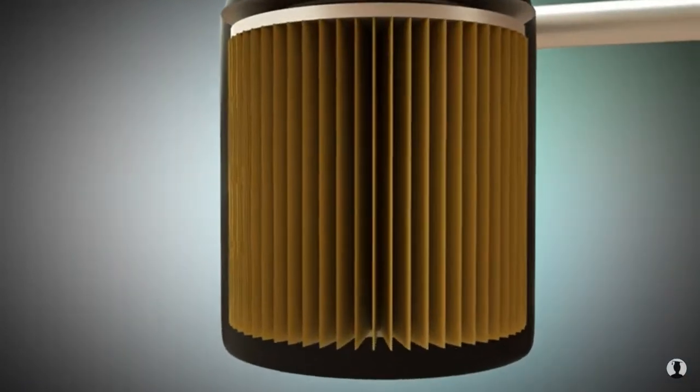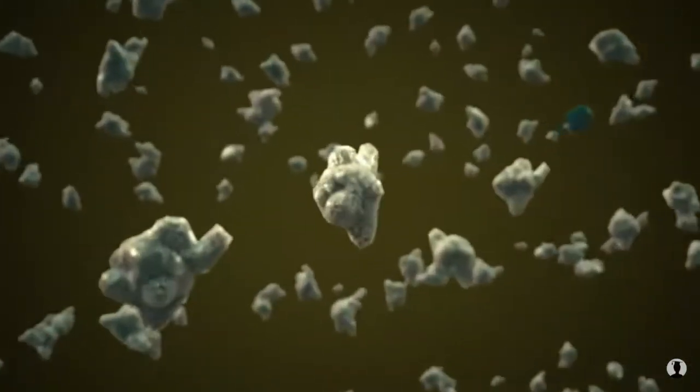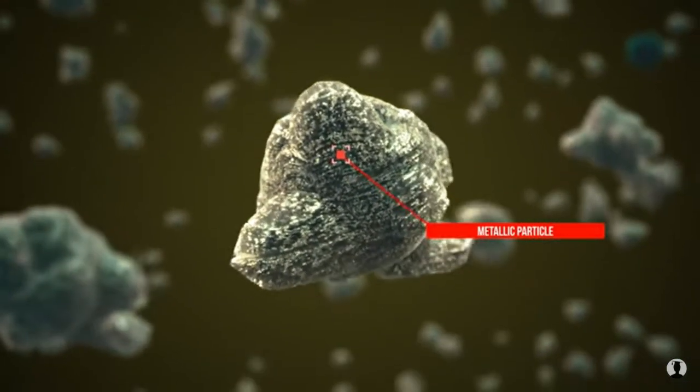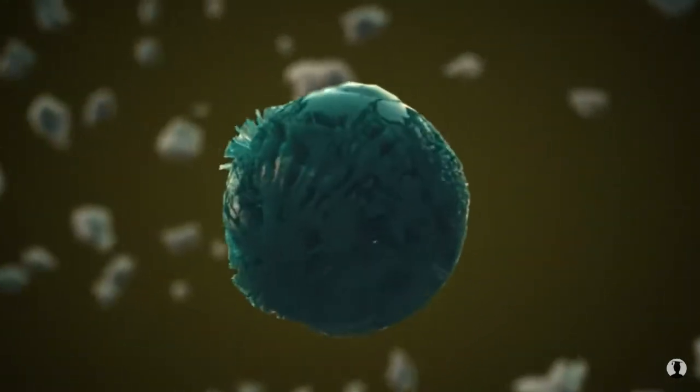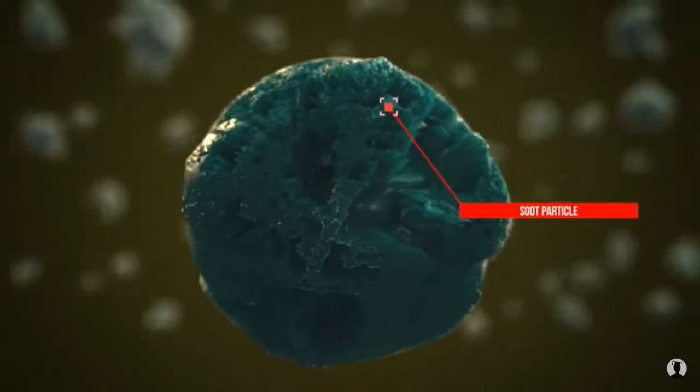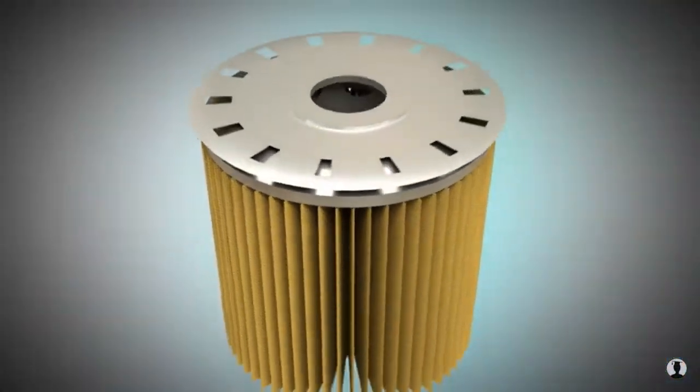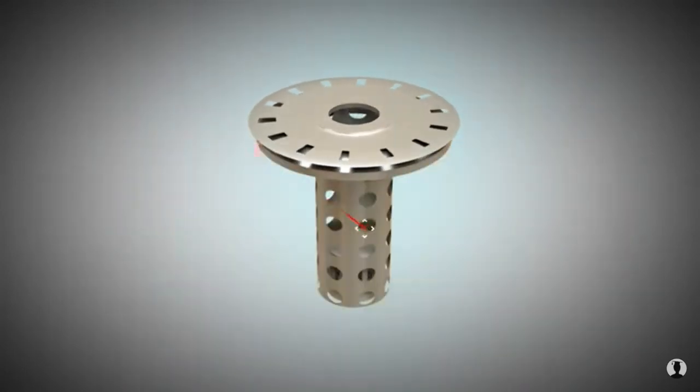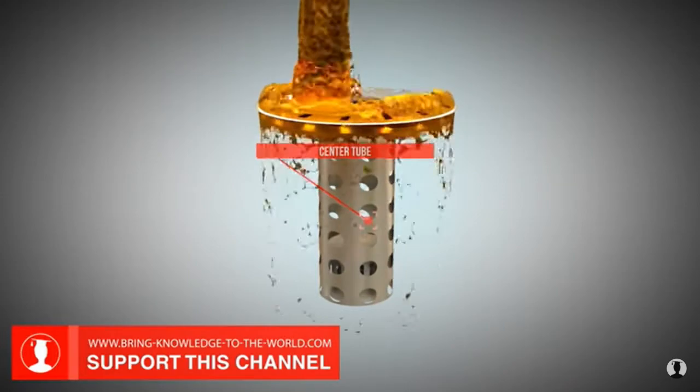Inside the oil filter is a filter that catches the particles in the oil and does not allow them to pass through to the engine. The oil flows from the outside into the oil filter, then runs through the filter, which is made invisible here, and flows through the center tube. Then, the oil flows upwards.